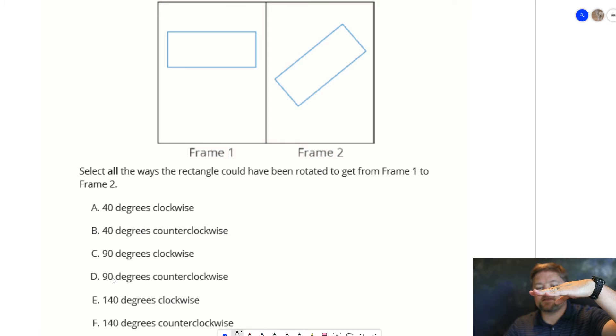A rectangle facing this way, 90 degree rotation would have it vertical, straight up and down. So, that cannot be right. So it can't be C or D. Clockwise versus counterclockwise.